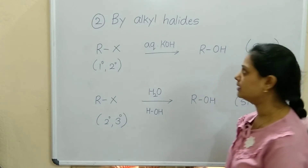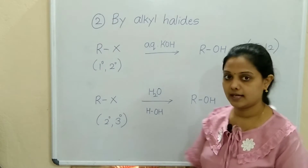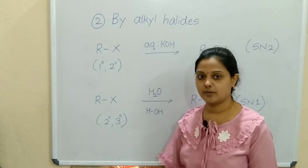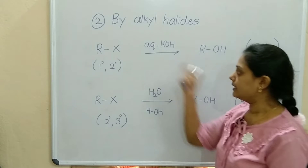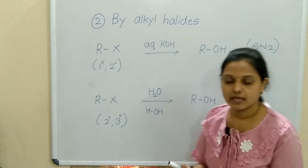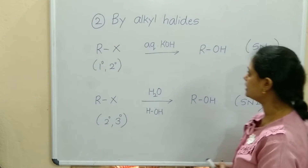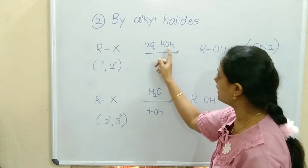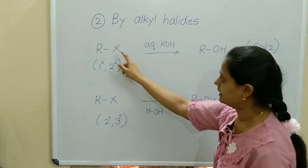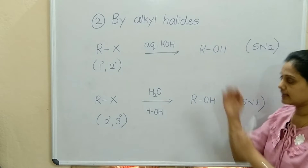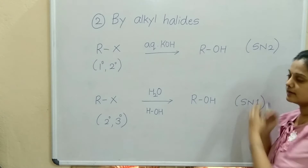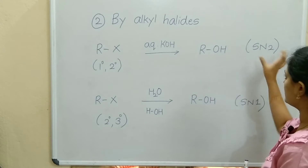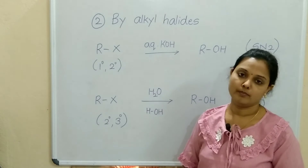Let's see the second preparation method by alkyl halides. The alkyl halide can be primary or secondary type. It reacts in the presence of aqueous KOH, giving R-OH as the product. K will attach with X and come out as a byproduct. This reaction follows an SN2 mechanism.